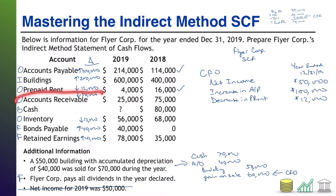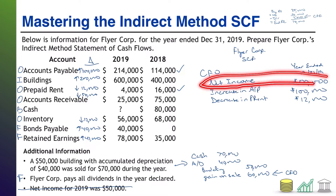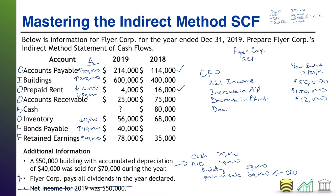Next in our operating items: there was a decrease in accounts receivable of $50,000. The reason accounts receivable goes down is customers paid you - you collected cash. Notice the journal entry that decreases AR results in cash in. But that journal entry did not affect net income, meaning we have a cash inflow from operations not included in net income. So we add it in: decrease in AR, $50,000.